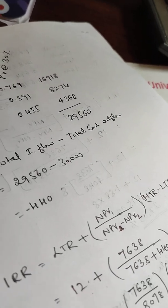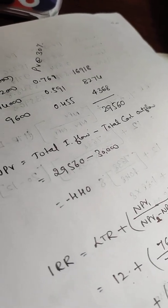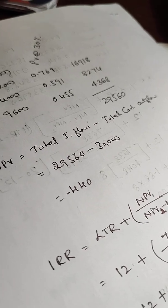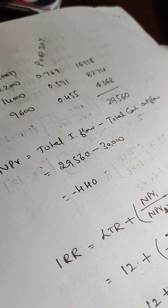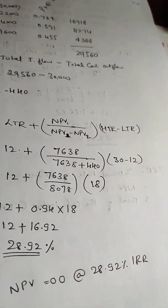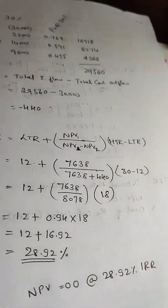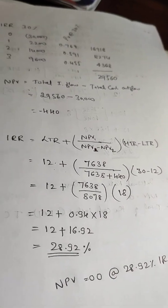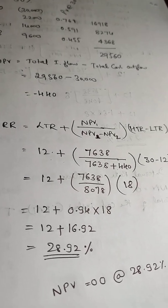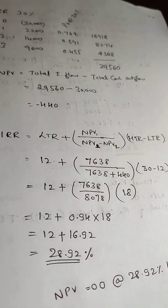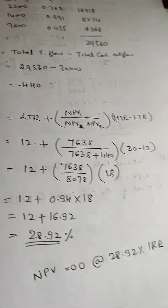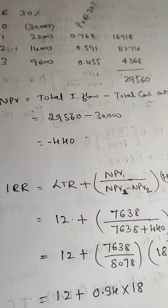So NPV equals zero at 28.92%. This completes the solution for Project X. The same approach applies to projects Y and Z. Friends, please practice at least one or two sums so that you can avoid mistakes in the exam.